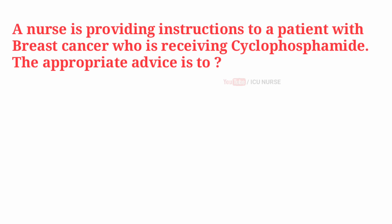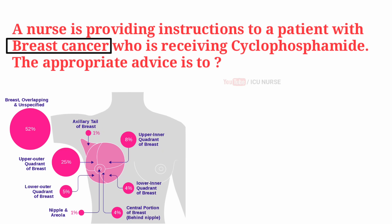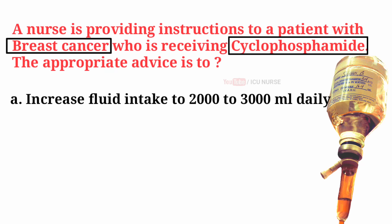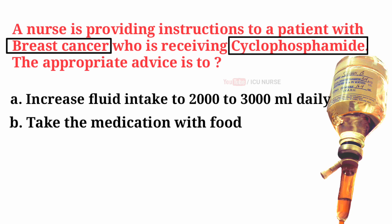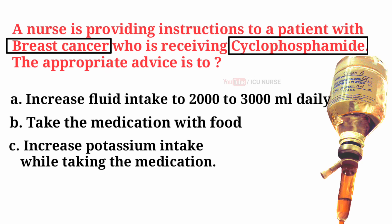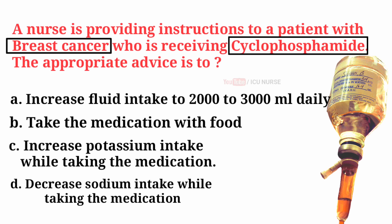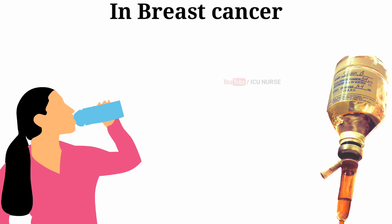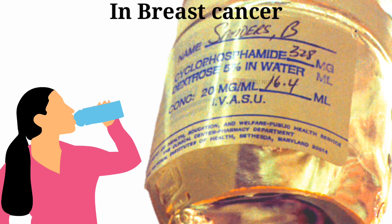A nurse is providing instructions to a patient with breast cancer who is receiving cyclophosphamide. The appropriate advice is to: A. Increase fluid intake to 2000–3000 ml daily. B. Take the medication with food. C. Increase potassium intake while taking the medication. D. Decrease sodium intake while taking the medication. And the correct answer is A — increase fluid intake to 2000–3000 ml daily. Increasing fluid intake while receiving cyclophosphamide prevents harmful effects on the patient's bladder.